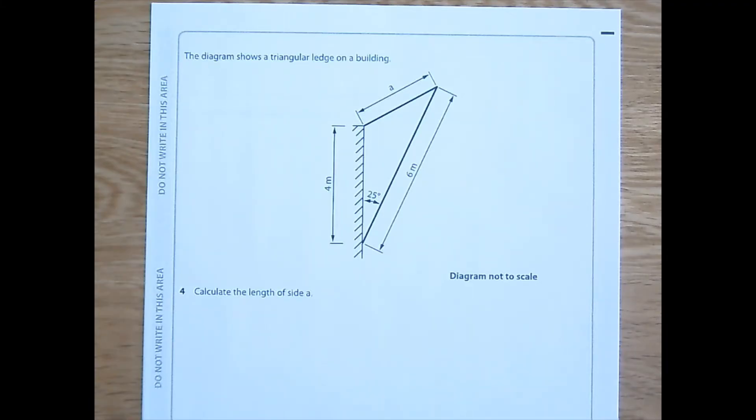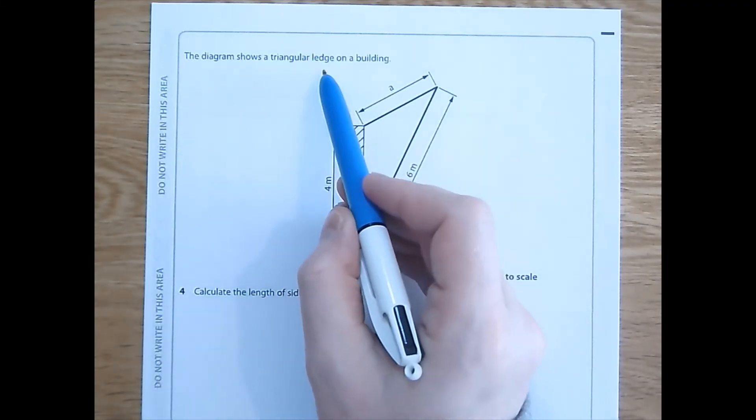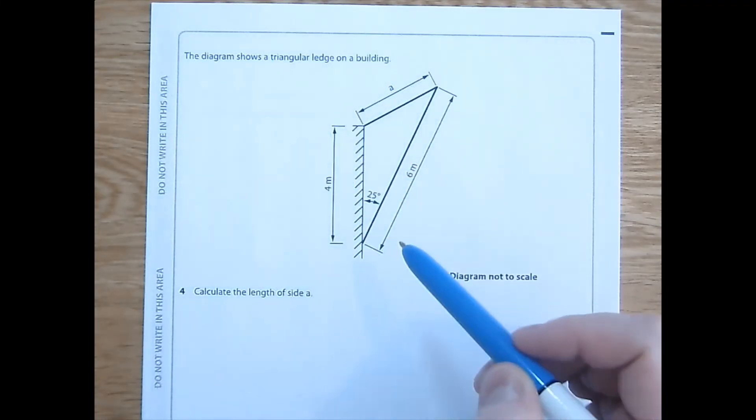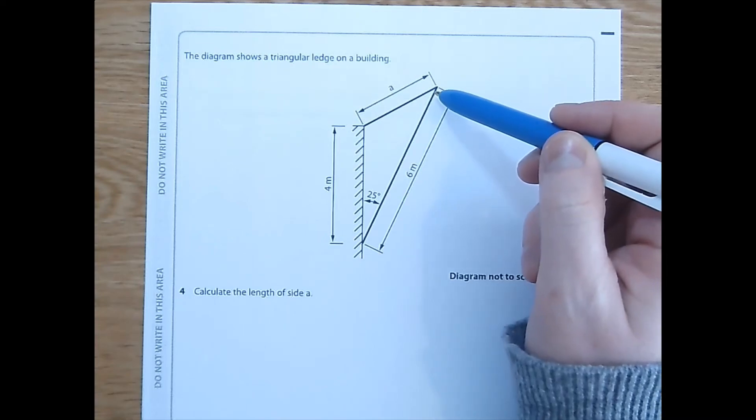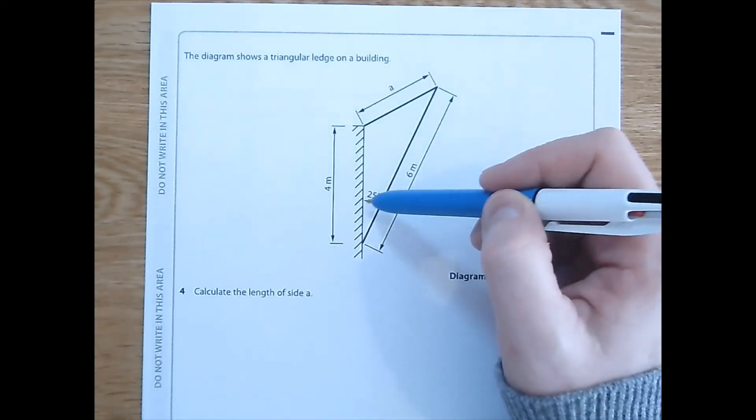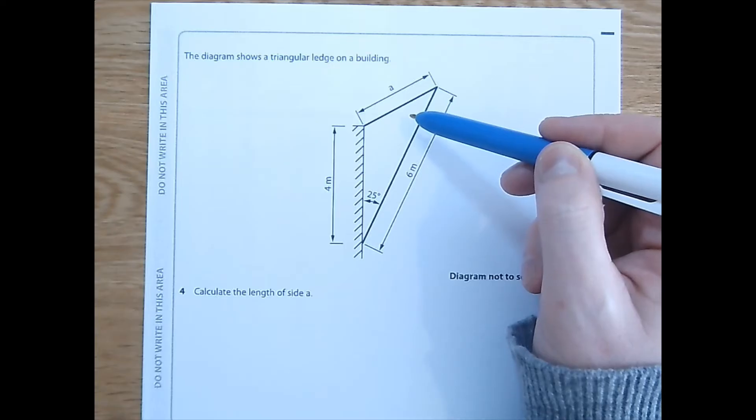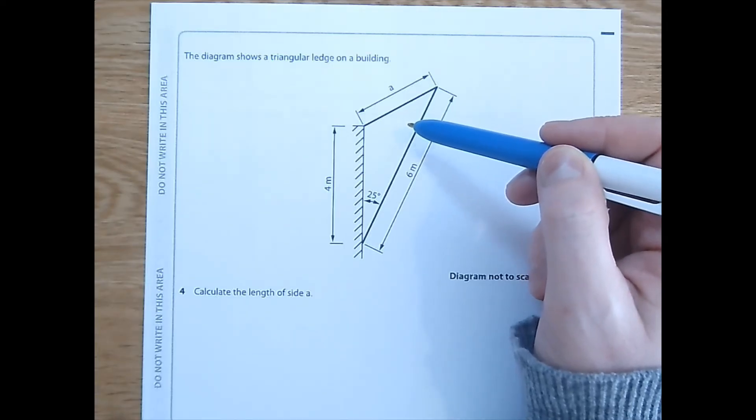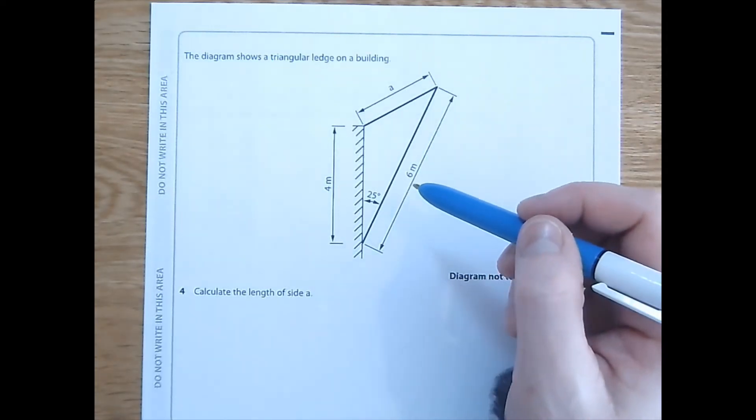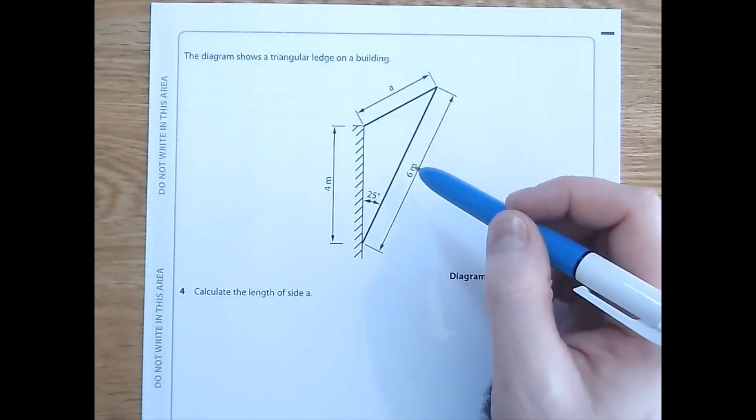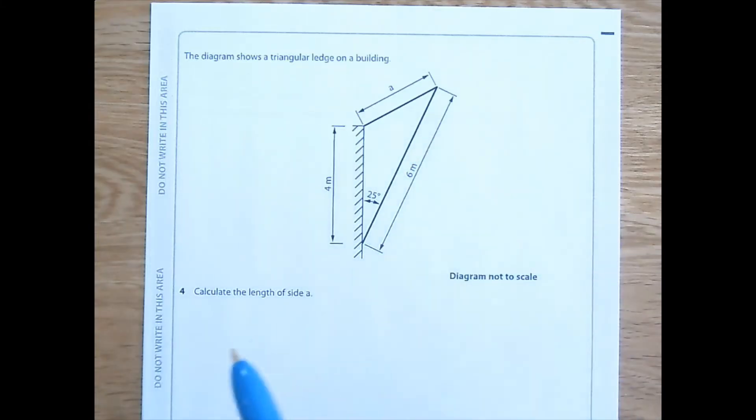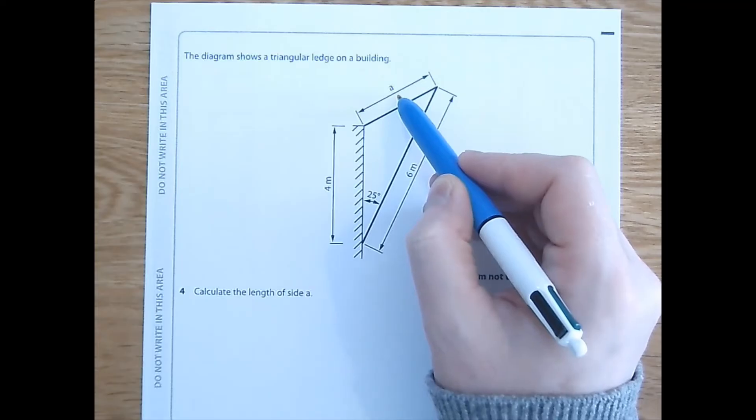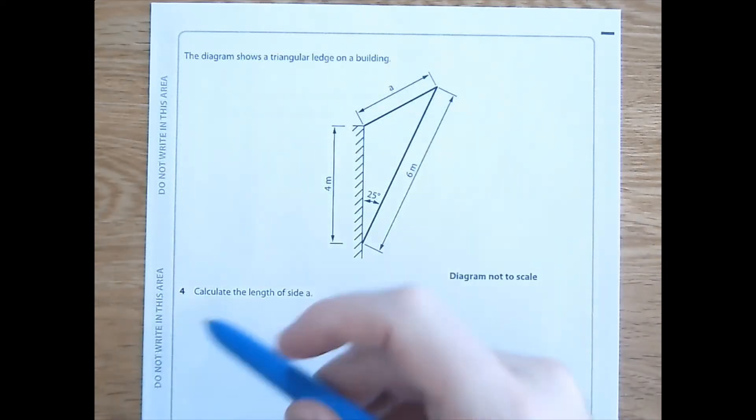Question 4. The diagram shows a triangular ledge on a building. Here's the diagram. And yep, that's a triangle. Okay, so we've got some dimensions on here. An unknown dimension and an angle. Looking at this, it's pretty obvious it's not a right-angled triangle. So, we're going to think about our two alternative methods. The sine rule and the cosine rule. But before we decide, let's just check what it's asking us to do. It wants us to calculate the length of side A. And that's side A here. So, we've related the text to the diagram.